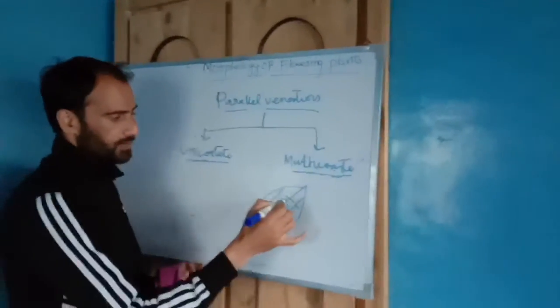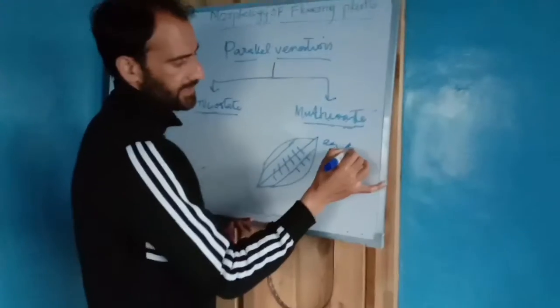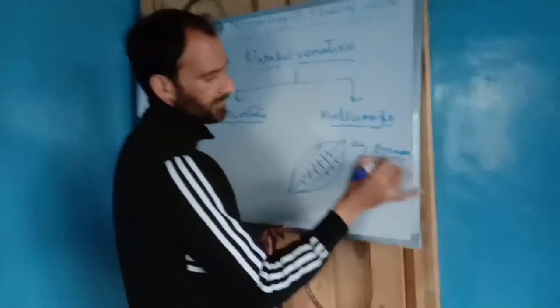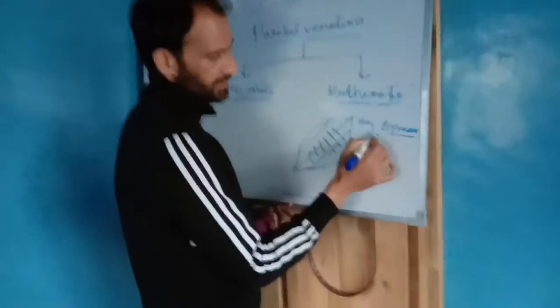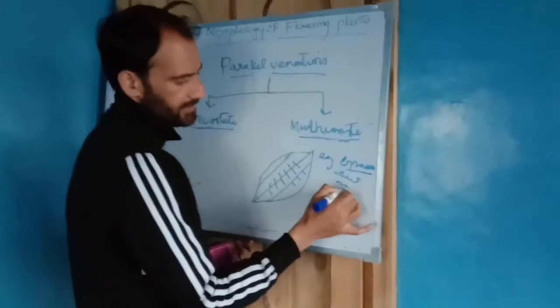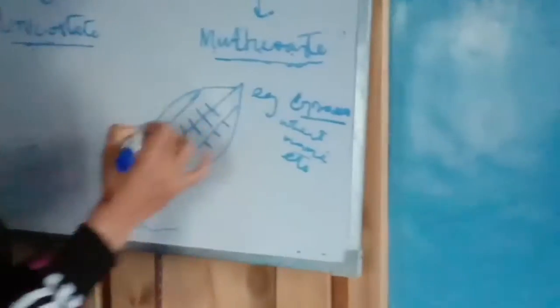Examples of multi-costate parallel venation include grass, wheat, maize, and so on.